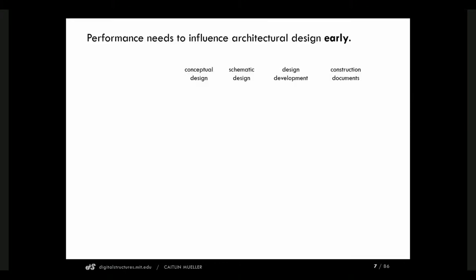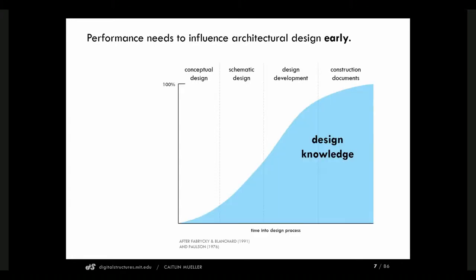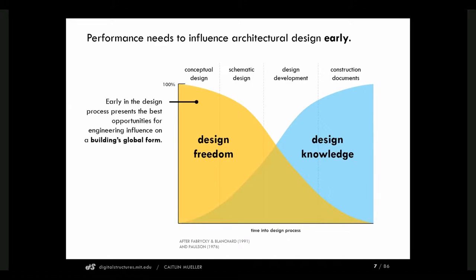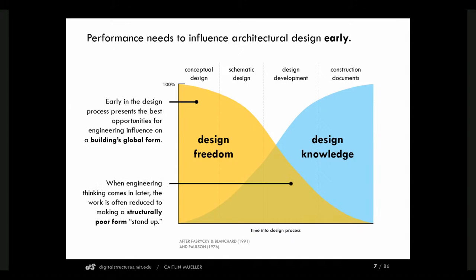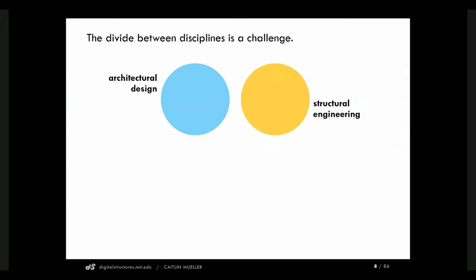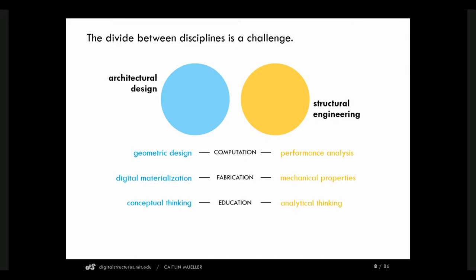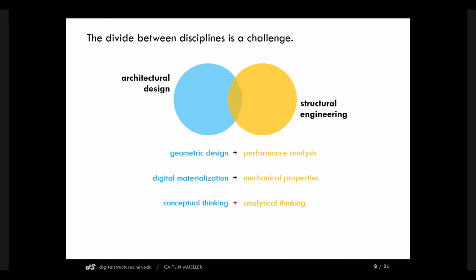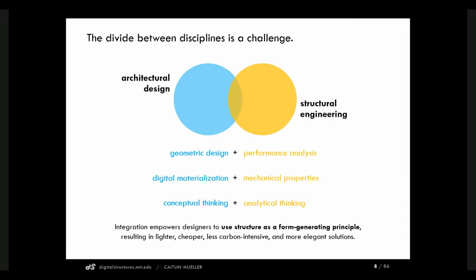One of the reasons this is hard is because performance is most easily evaluated at the end of the design process when we know the most about the design concept, but it's critical to bring it in at the very beginning. Early in the design process, when decisions aren't yet made, is the best opportunity to make the right decisions with data, simulations, and performance, and yet too often technical and engineering information isn't brought in until a design is already evaluated. This is also hard because of disciplinary boundaries — in architecture and structural engineering, we're literally talking about the same building, yet we're so often divided and isolated from each other.